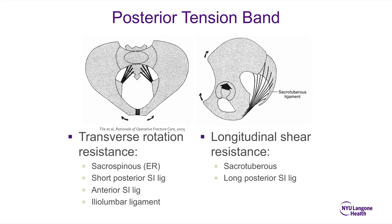The posterior tension band — transverse rotation resistance — is made up of the sacrospinous ligament, the short posterior SI ligaments, the anterior SI ligaments, and the iliolumbar ligaments. When you externally rotate the ilium, the sacrospinous ligament provides resistance, which is relevant during APC-type pelvic ring injuries. If the sacrospinous ligament and anterior SI ligaments are torn, you will be able to open up the book — this is how the APC classification is derived. APC1 is a symphyseal injury only; APC2 adds torn pelvic floor ligaments including the sacrospinous and anterior SI ligaments; APC3 includes torn posterior SI ligaments as well.